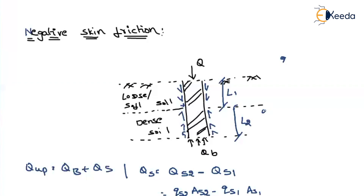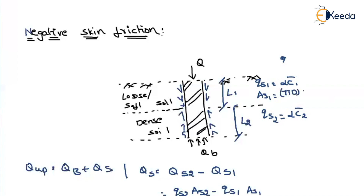In the l1 portion, qs1 is equal to alpha times c1-bar, multiplied by as1, where as1 equals pi times d times l1. In the l2 portion, qs2 is equal to alpha times c2-bar, multiplied by as2, where as2 equals pi times d times l2.